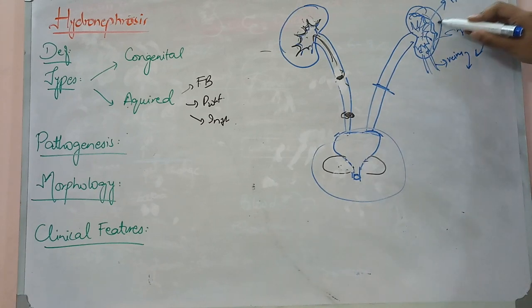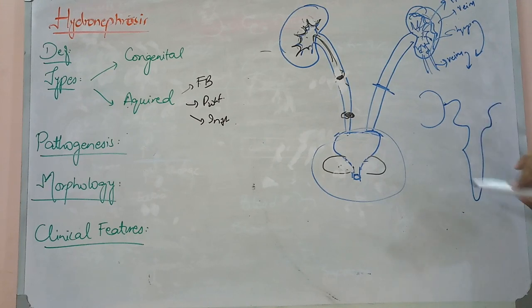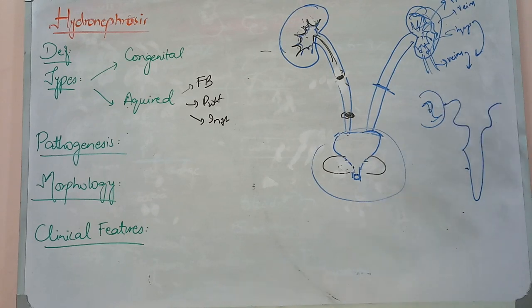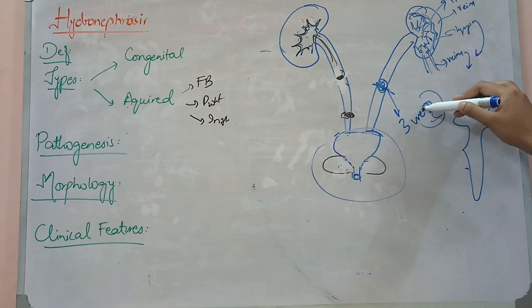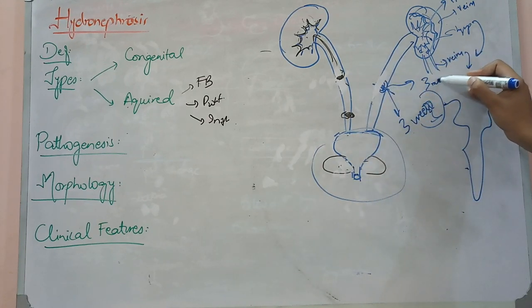When the lymphatic drainage is exhausted, fluid collection increases. The pressure compresses the renal vasculature — arteries and veins. Compression of the arteries leads to ischemia and necrosis begins. Venous compression causes blood stasis and pooling. The glomeruli can no longer function normally. If there is complete obstruction, irreversible damage occurs within approximately three months. If there is partial obstruction, it may also become irreversible within three months if not treated.